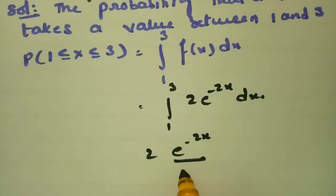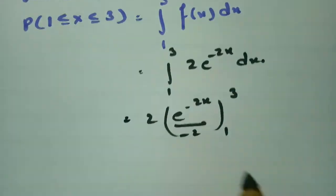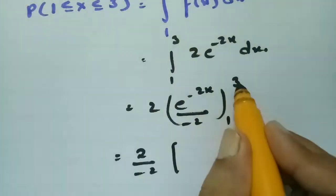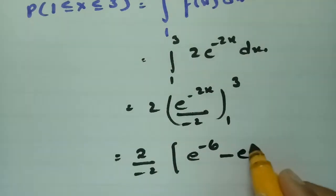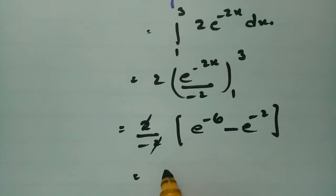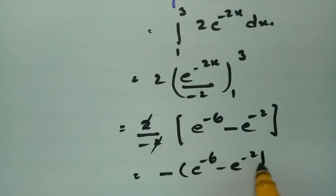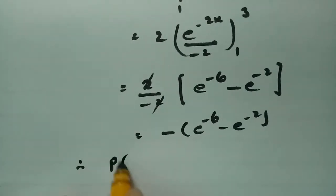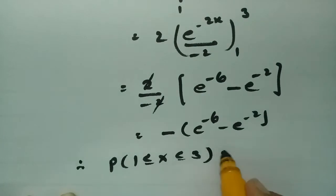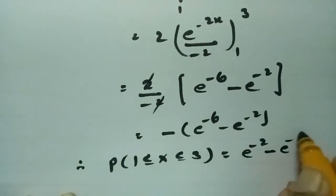Integrating e^(-2x) gives e^(-2x) divided by minus 2, evaluated between the limits 1 and 3. So we have 2 divided by minus 2, which simplifies. Applying the upper limit gives e^(-6) and the lower limit gives e^(-2), so the result is minus of (e^(-6) minus e^(-2)). Therefore, P(1 ≤ x ≤ 3) = e^(-2) minus e^(-6).